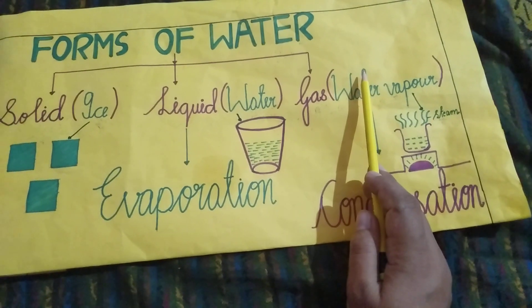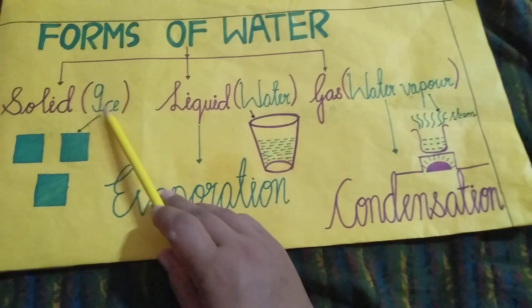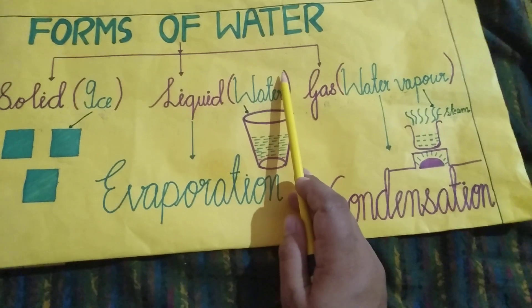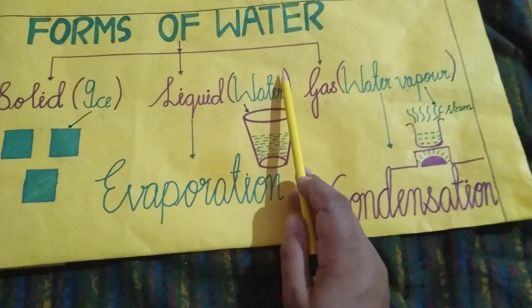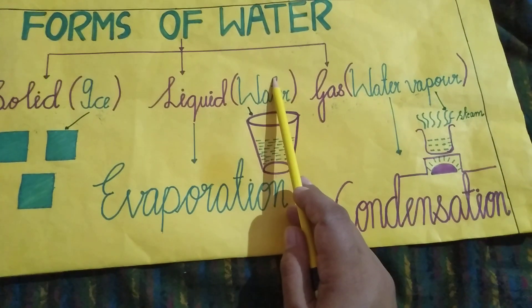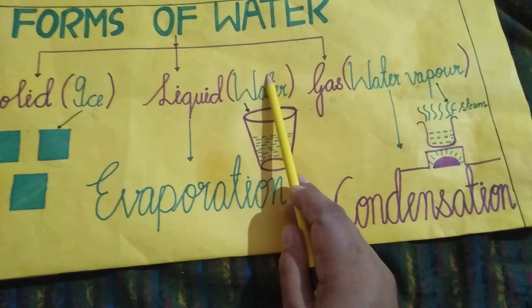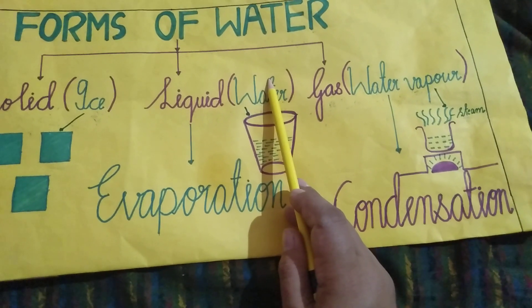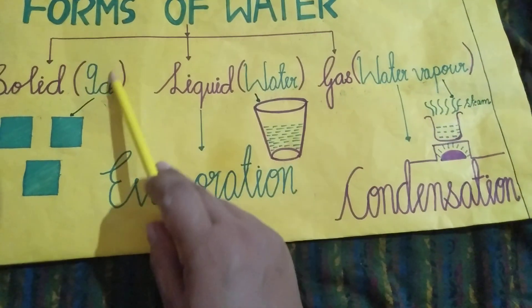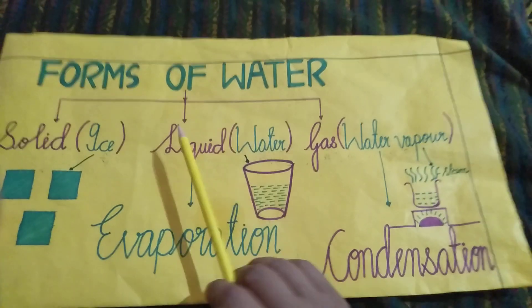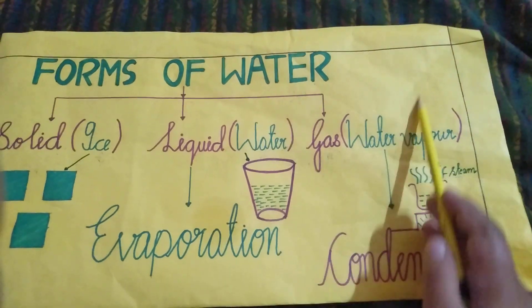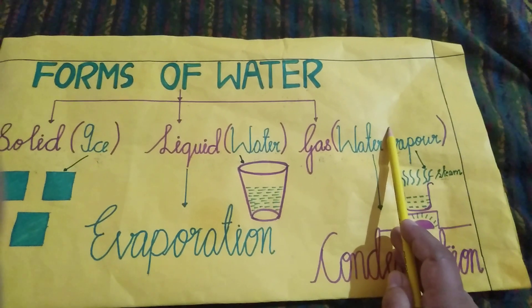Water can become water vapor with heating. Ice can be turned to water with heating. Ice kis me change ho sakti hai? Water mein. Same — water can be turned to ice. Water bhi kis me change ho sakti hai? Ice mein.